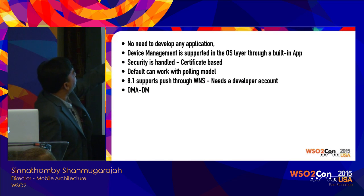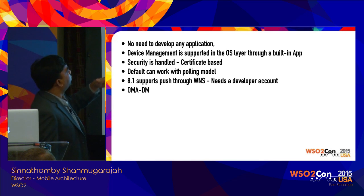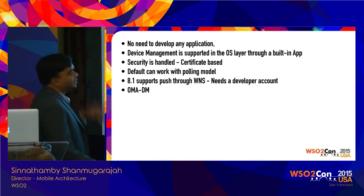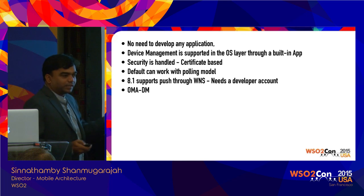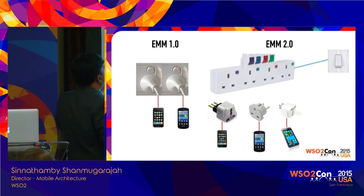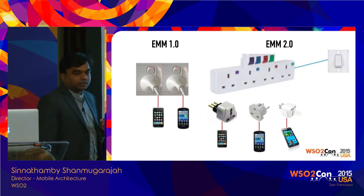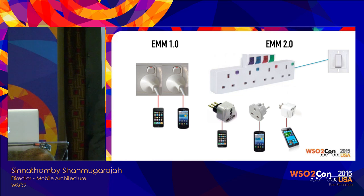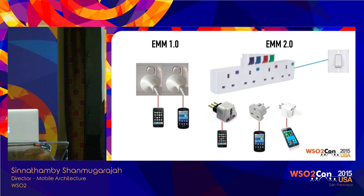If you have to write a mobile management system, you have to write separately for each platform, which is a major challenge. Looking at our EMM 1.0 product, the architecture was tightly coupled. If you wanted to add a new device type, you had to break into the existing code and rewrite things — there was no plug point. We started on a new architecture about two years ago to address this, and we verified that device communication works, which is how we built it.